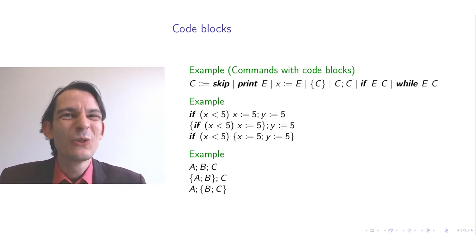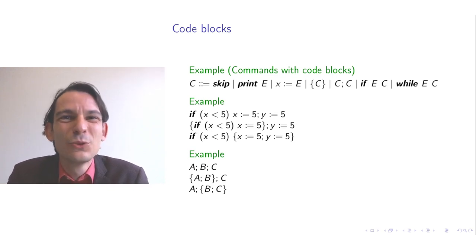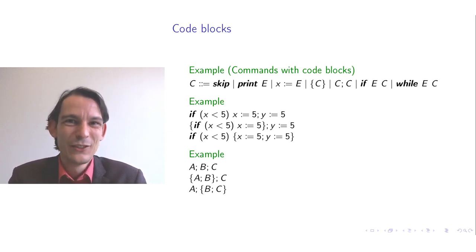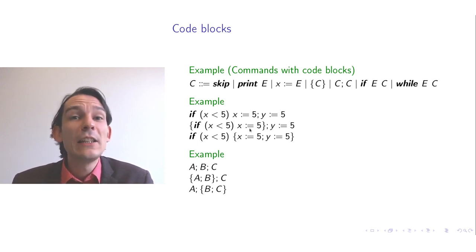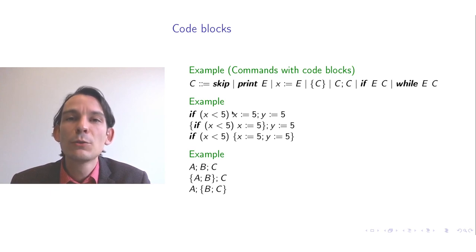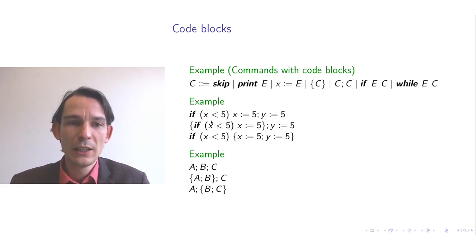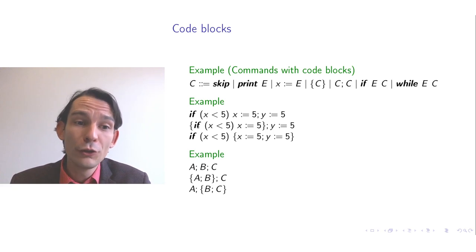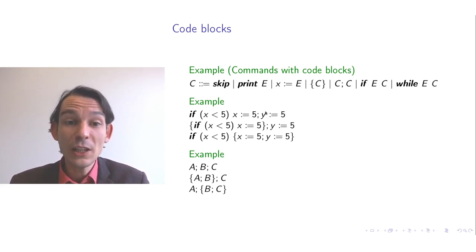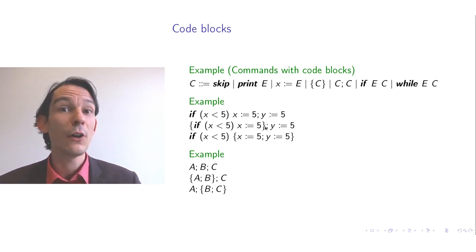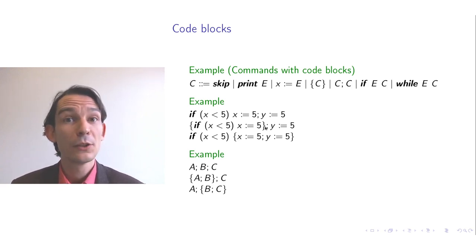To avoid confusion, it is better to write code that is unambiguous. In an ambiguous case where an if is followed immediately by a command, we interpret only the next command as falling under the if body. So the assignment x=5 falls under the if, and the assignment that follows it is outside the if body. The same applies for while — meaning if and while precede sequential composition.